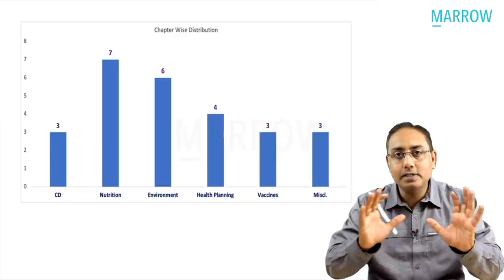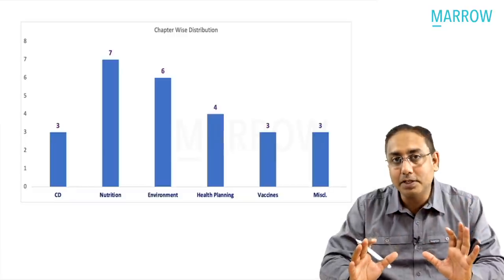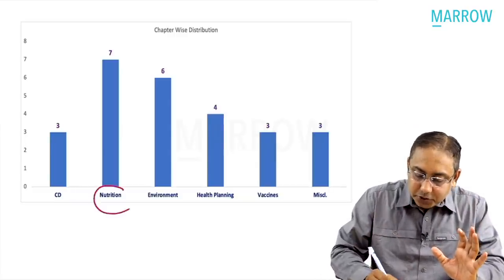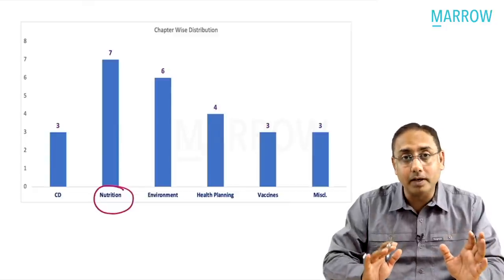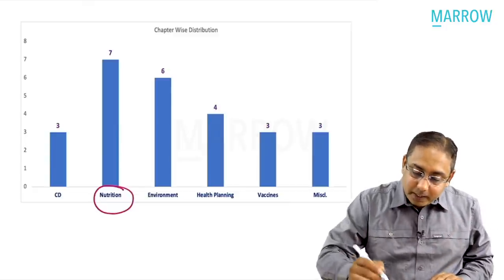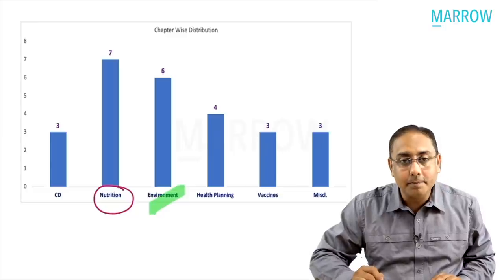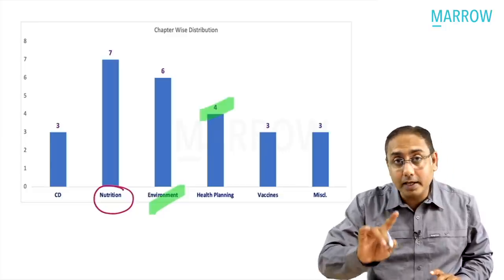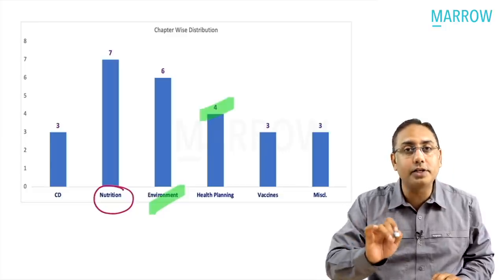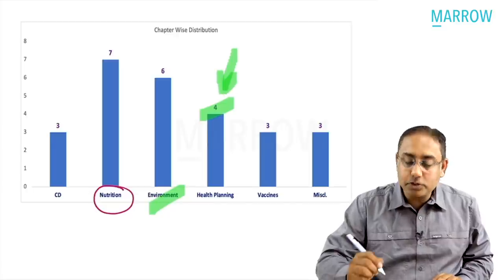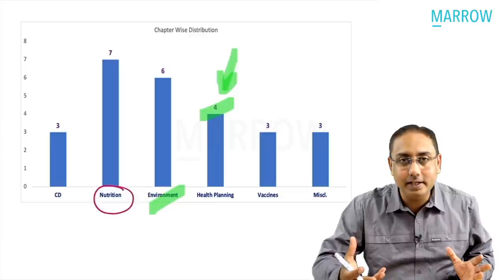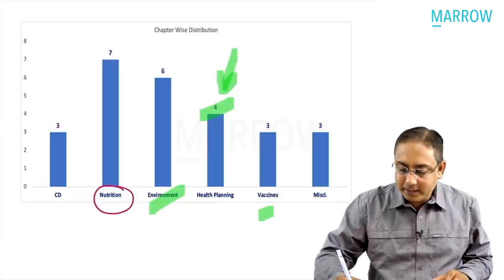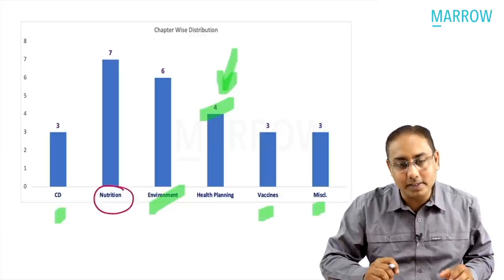Analyzing this whole MCQ exam, maximum questions in 2021 were from the nutrition topic. Next, many MCQs were from environment, then from health planning - which was unconventional, as so many questions on health planning have not been seen in NEET entrance exam till now. Then there were questions on vaccines, miscellaneous topics, and communicable disease.